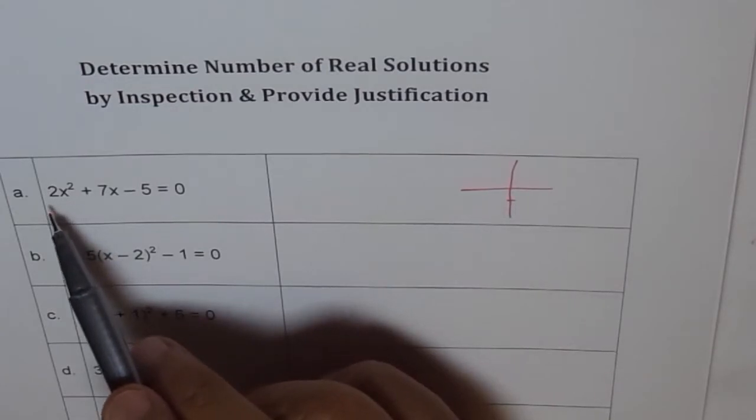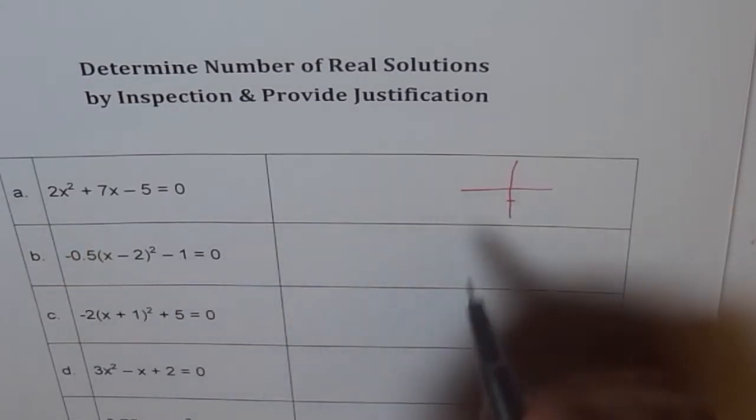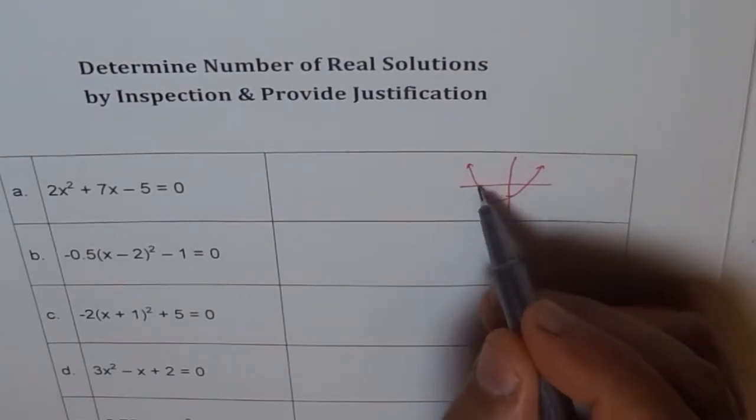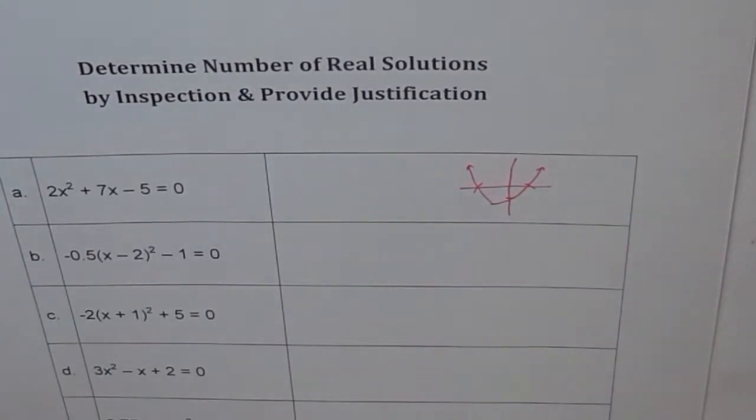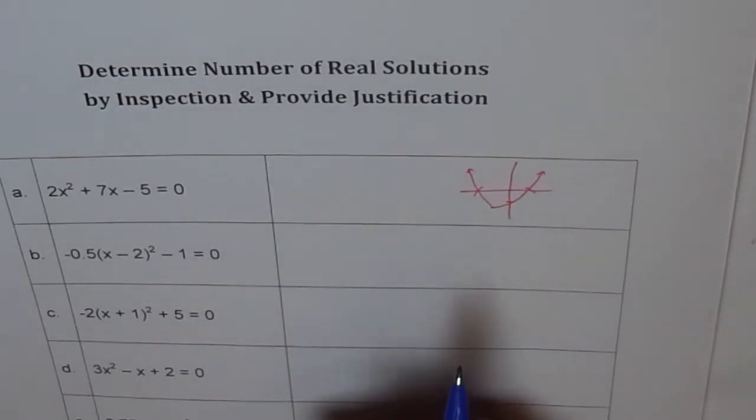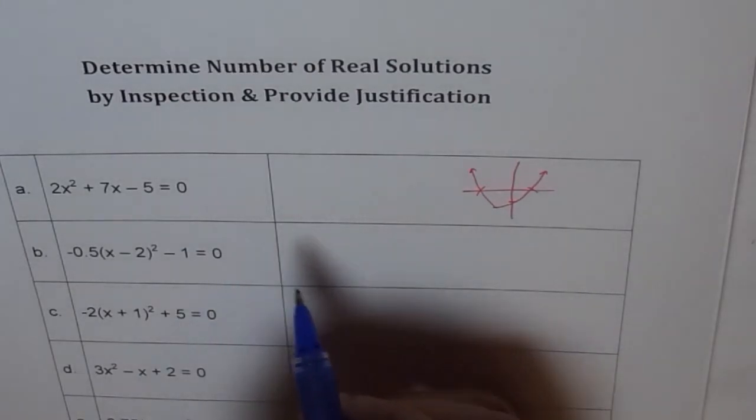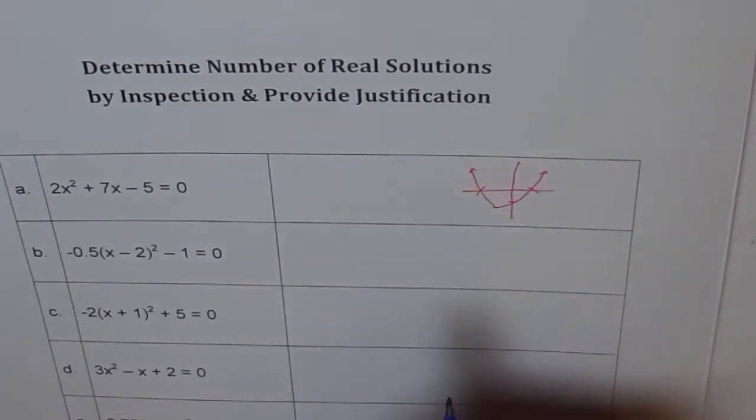And 2 means it is opening upward. So if the graph is anyway going kind of like this, it will cross at two points. Therefore we can say that this graph should intersect the x-axis at two points, therefore we have two real solutions.